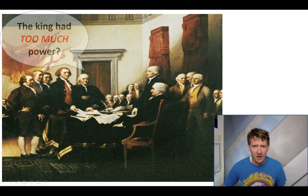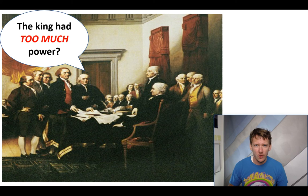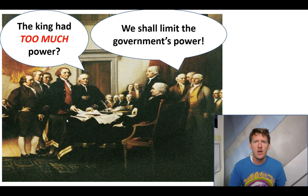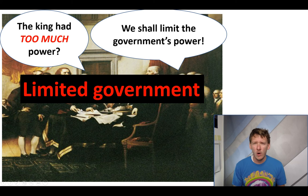The founding fathers are coming from a government that had too much power, too much authority, and not enough rule by the people. So the first focus is: we don't want the government to have too much power. We need to limit the government's power. The revolution's over, we're going to establish our own nation and our own government. In these documents, we're going to write down all the details and blueprints to how this government is going to be set up, and we're going to specifically limit the government's power.